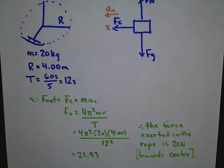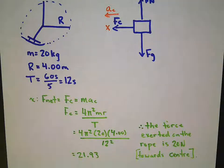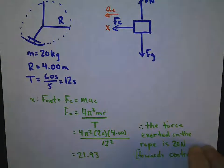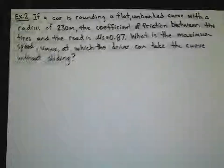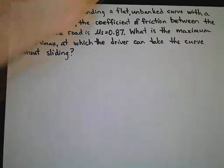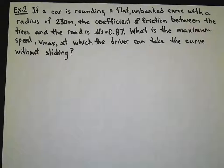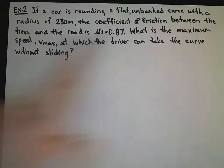Okay, so there's one type of question that I might ask you to complete, basically given, find the centripetal force. Now we get to see my fantastic artwork. In example 2, we have a car rounding a flat, unbanked curve with a radius of 230 meters. And we have a coefficient of friction between the tires and the road of mu s 0.87. We're going to find the maximum speed at which the driver can take the curve without sliding.